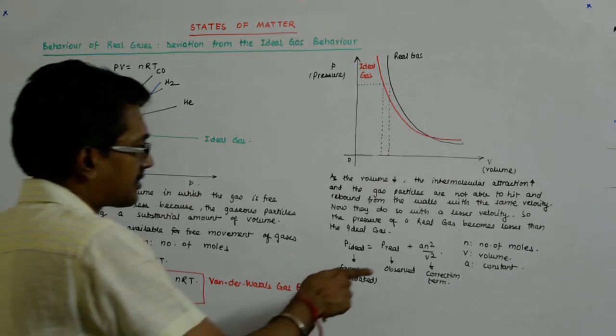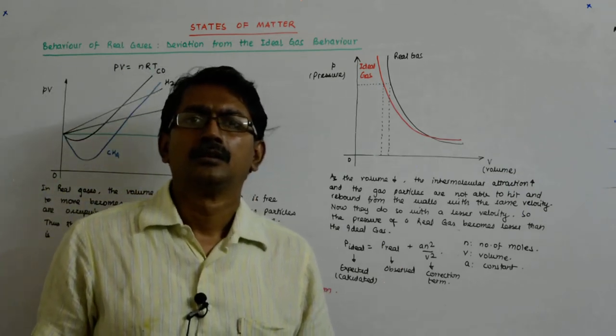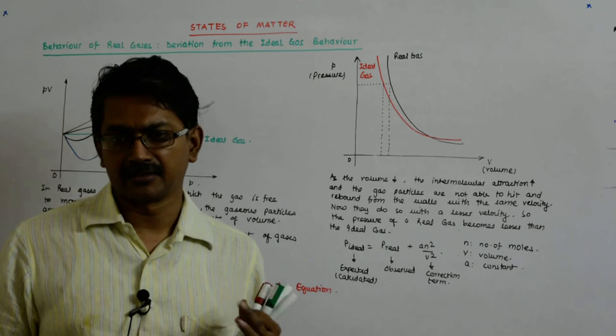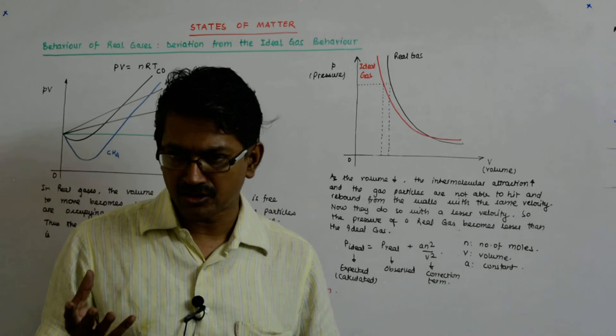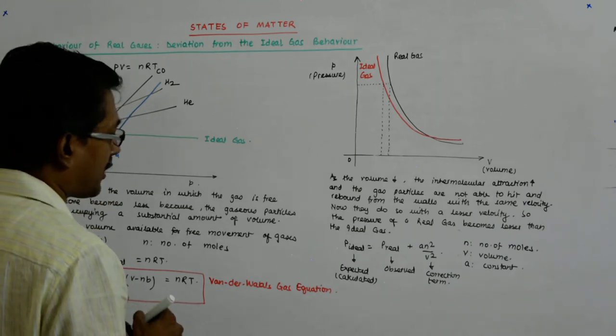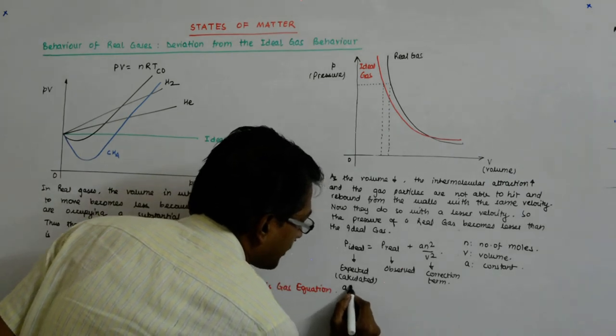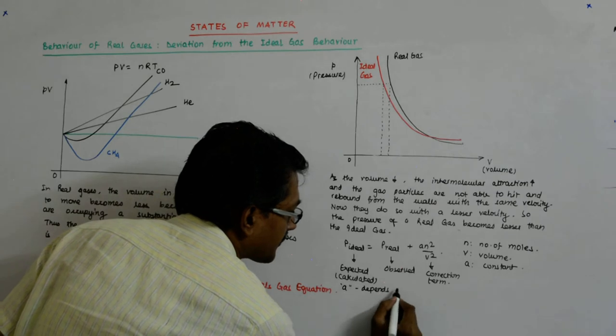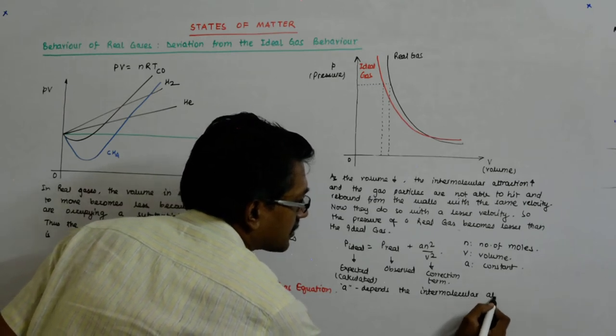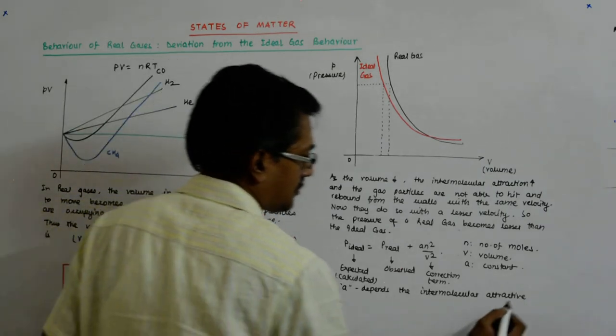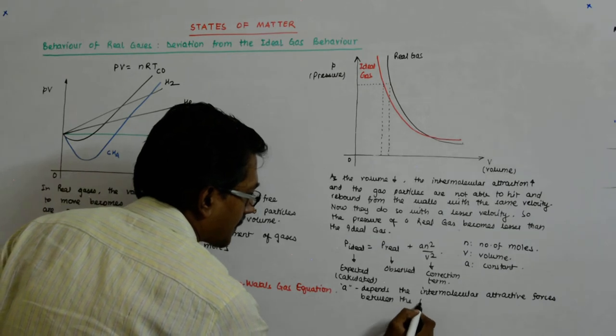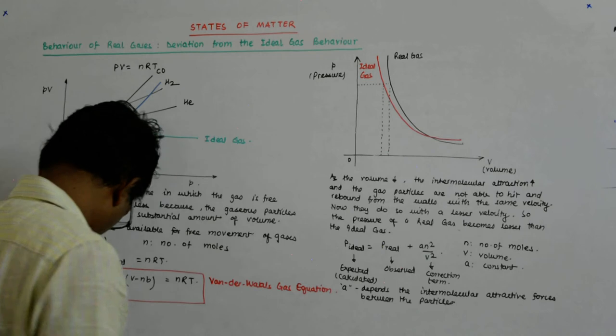A is a constant and what will it depend on? How attractive? Different gas particles might have different intermolecular attractions when they come together. So higher the intermolecular attraction, more will be the value of A. So A will depend on the intermolecular attractive forces between the particles.